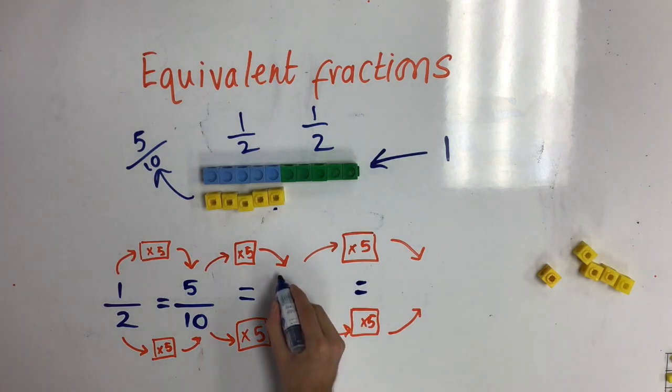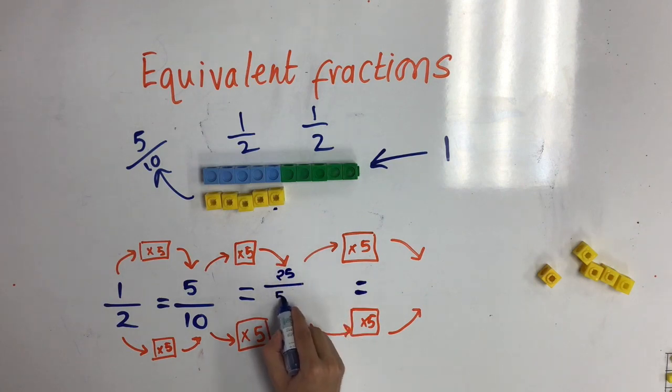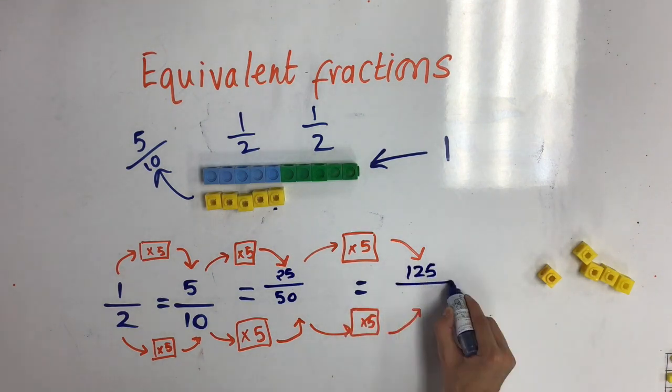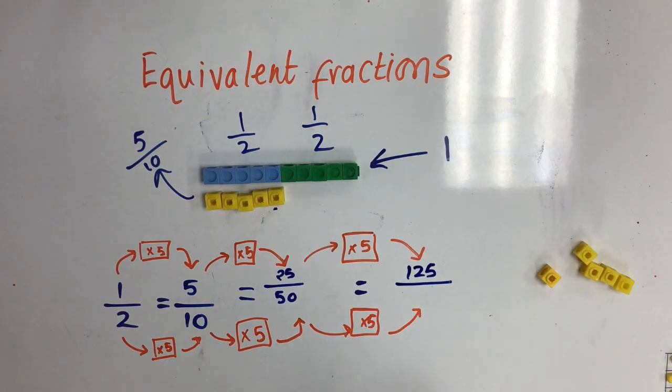So five times five is twenty-five, and ten times five is fifty. Then twenty-five times five is one hundred and twenty-five, and fifty times five is two hundred and fifty.